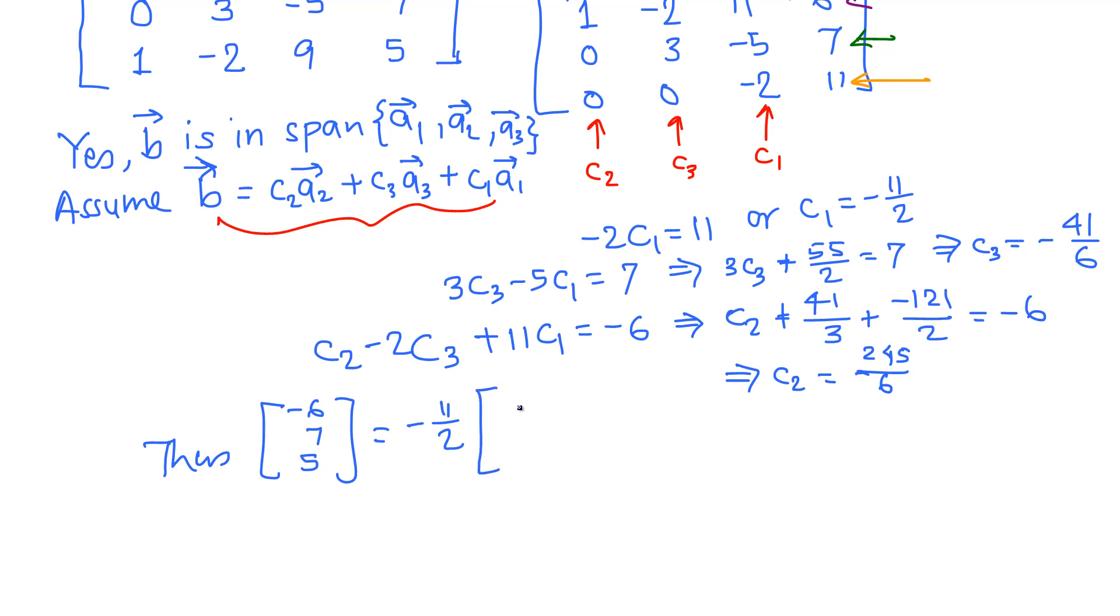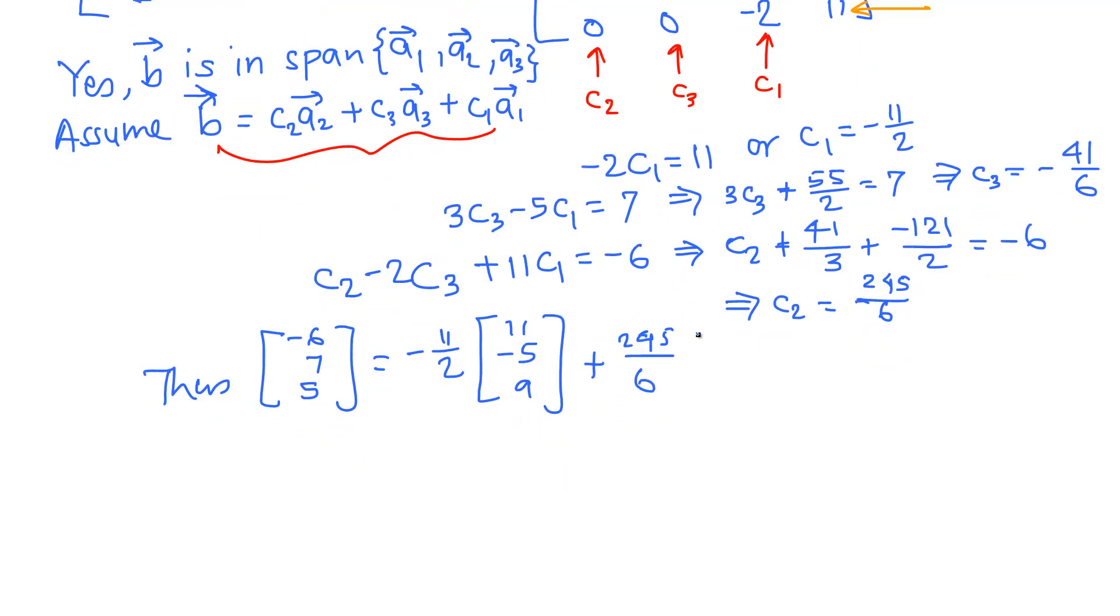a1 is given as [11, -5, 9], plus c2*a2. c2 is 245/6, and a2 is [1, 0, 1], plus c3*a3. c3 is -41/6, and a3 is [-2, 3, -2], as given in the question. Now we are able to write B as c1*a1 + c2*a2 + c3*a3.